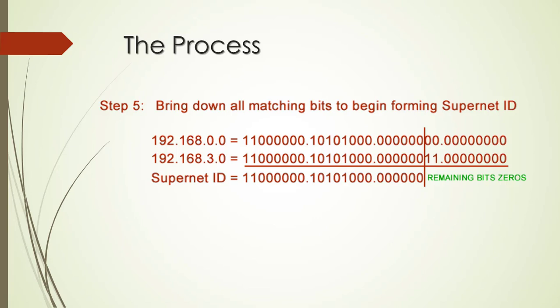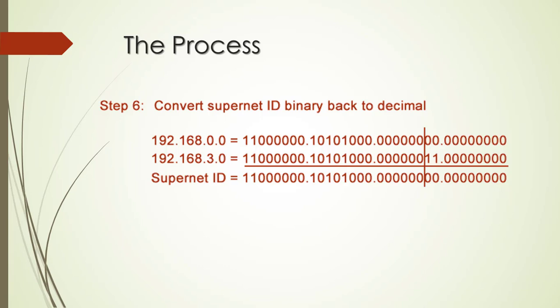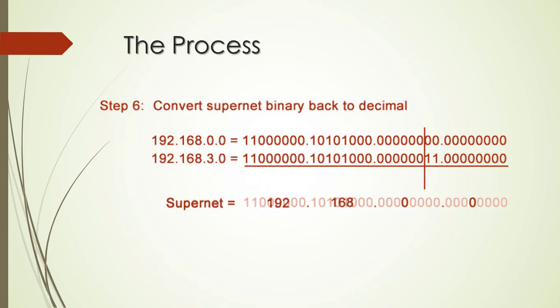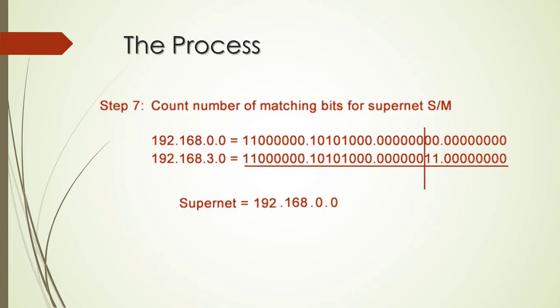Once we have all of those bits determined for our supernet ID now we can take it back to a decimal format. So we just convert that binary representation of the supernet back into a decimal format and the next step in the process we need to determine what is the subnet mask that's going to go along with that supernet and we just simply count the number of matching bits that we had and that becomes our subnet mask to go along with our new summarized supernet.